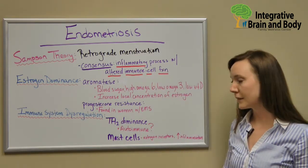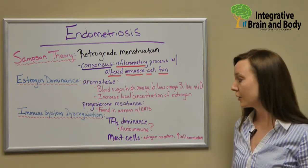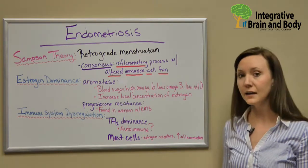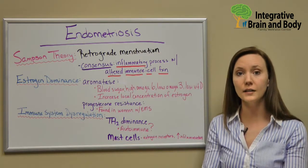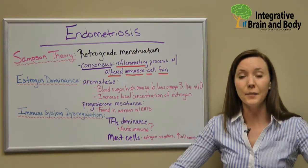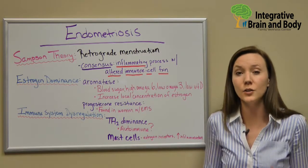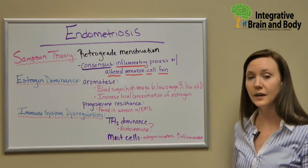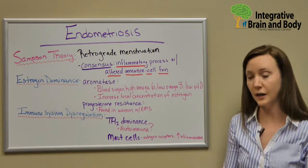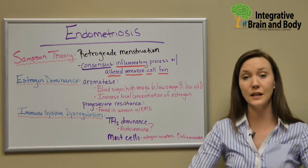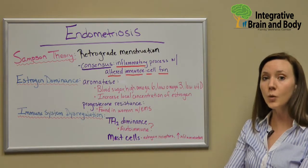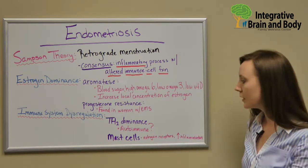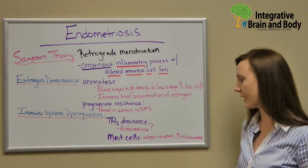With that Th2 dominant response, researchers are wondering whether endometriosis is actually an autoimmune disease. They're also seeing a massive amount of mast cells in women with endometriosis. Mast cells degranulate and cause a big inflammatory response, which is part of what causes so much pain with endometriosis. Importantly, mast cells also have estrogen receptors — so when we have dominant estrogen, we're going to have an increase in mast cells, an increase in that inflammatory component, which leads to more symptoms and possibly pushes further into endometriosis.